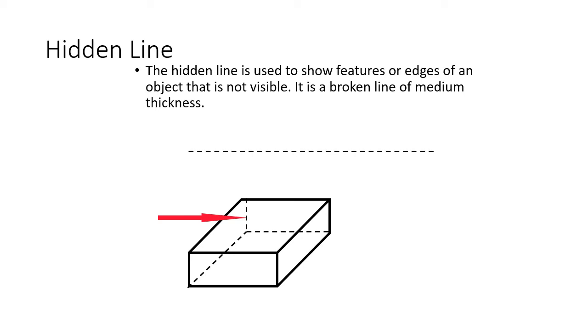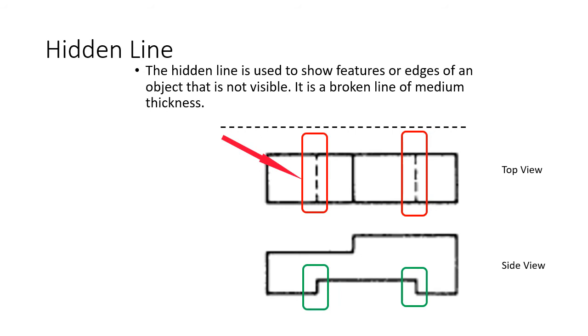But they're hidden lines. We can't see them from the direction that we're looking at the drawing. So this is a hidden line. That's what the dashed lines are. The hidden line is used to show features or edges of an object that is not visible. It is a broken line of medium thickness. All right, so here I've got two views. I've got a side view and I've got a top view. So you can see in the side view I can see that there's a notch down there in the green. I've got those green boxes outlining that contour or that edge that we can see.